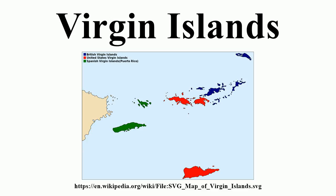The Virgin Passage separates the American Virgin Islands from the so-called Spanish Virgin Islands of Vieques and Culebra, which are part of Puerto Rico.